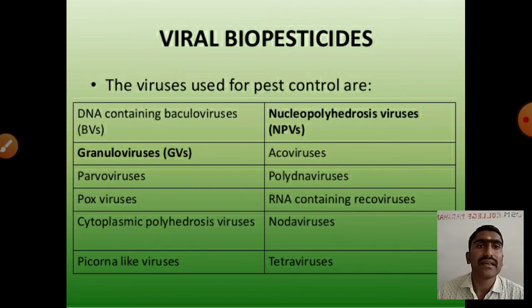So these are some examples of viral biopesticides in which viruses are used. Baculovirus is also a DNA-containing virus. These are some examples of viral biopesticides given here.